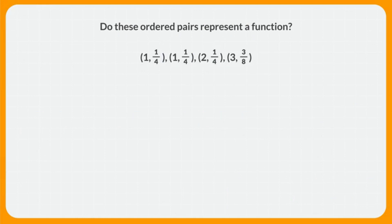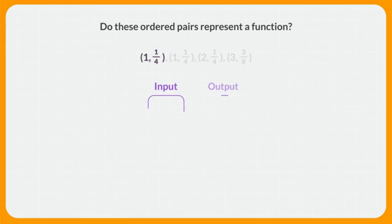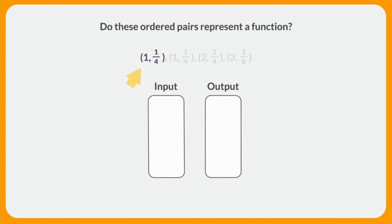Together, let's figure out if these ordered pairs represent a function. In each of these ordered pairs, the x represents the input and the y represents the output. We'll use an input-output map to organize the information. Let's start with this point. Which number is the input? The x value of 1 is the input. So under input, we'll put a 1, and across from that, under output, we'll add 1 fourth.